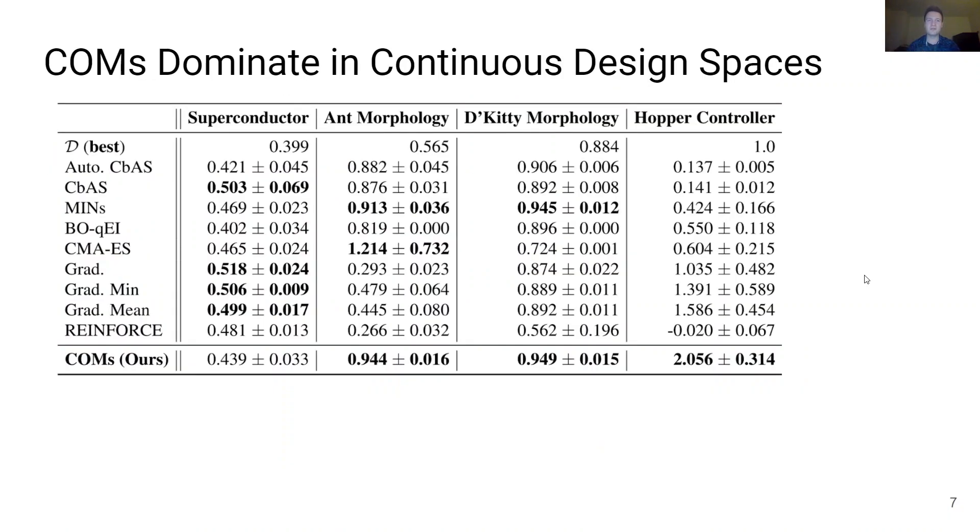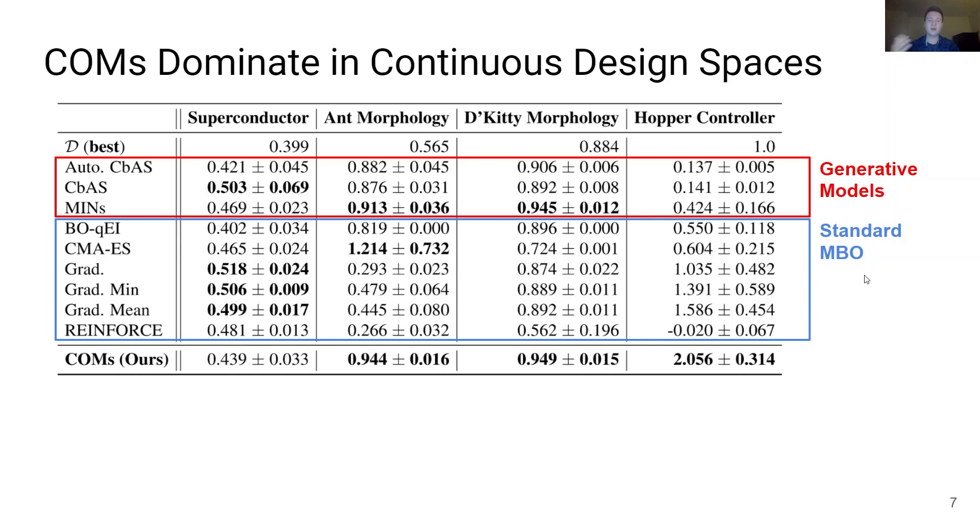We evaluate conservative objective models using seven tasks derived from real-world design problems. We evaluate COMs against methods that utilize generative models as well as standard offline model-based optimization techniques. We use the first four tasks to test the ability of conservative objective models to solve high-dimensional optimization problems with continuous design spaces. For example, the goal of the task D-Kitty morphology is to design the morphological structure of the D-Kitty robot represented by the lengths, positions, and orientations of all four of the robot's limbs.